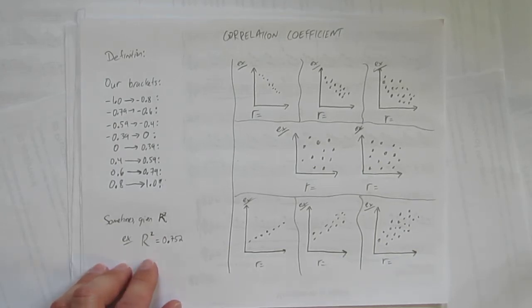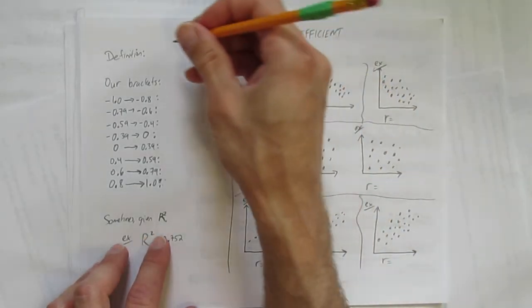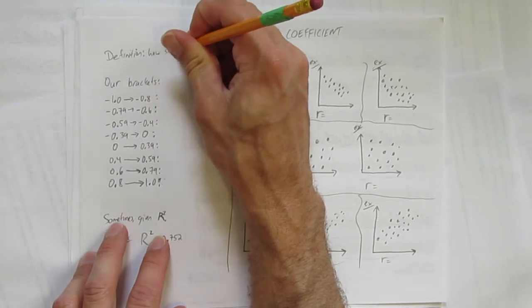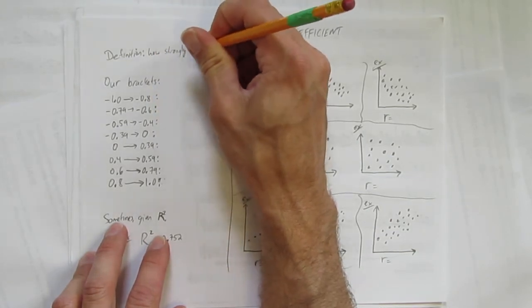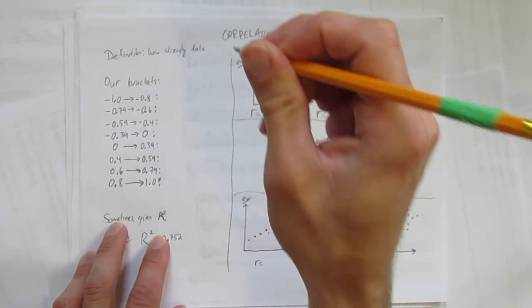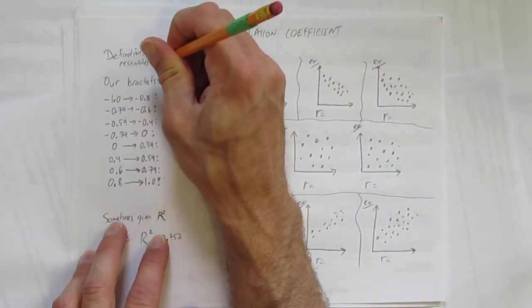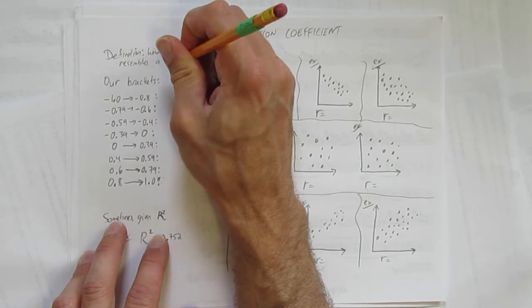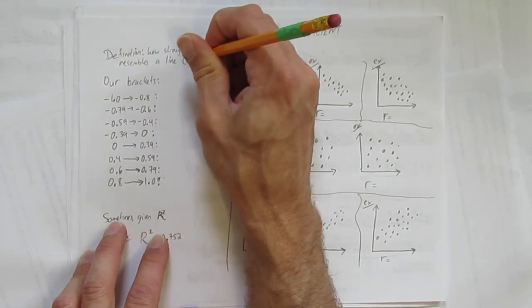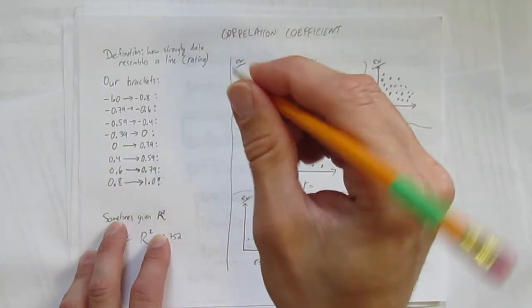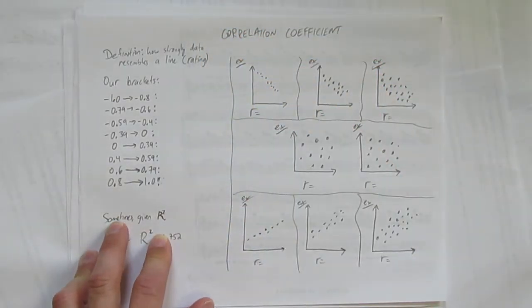But for our purposes we'll keep it nice and simple and just talk about correlation coefficient as how strongly the data resembles a line. That's our definition and I'll put in brackets, it's also like a rating. It helps to think of the correlation as a rating of how strongly the data resembles a line.